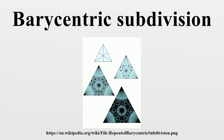The name is also used in topology for a similar operation on cell complexes. The result is topologically equivalent to that of the geometric operation, but the parts have arbitrary shape and size. This is an example of a finite subdivision rule. Both operations have a number of applications in mathematics and in geometric modeling, especially whenever some function or shape needs to be approximated piecewise, e.g., by a spline.